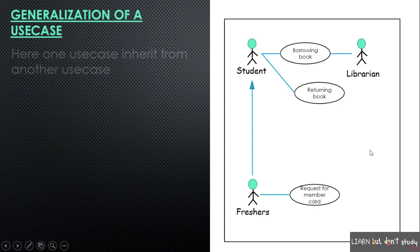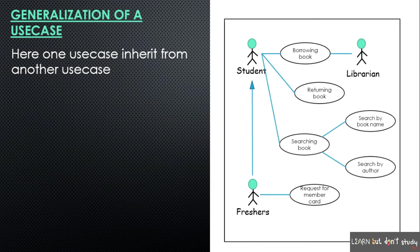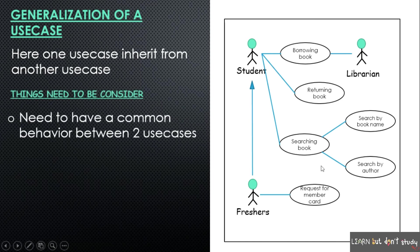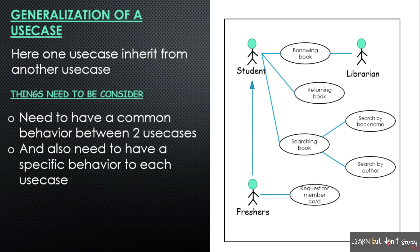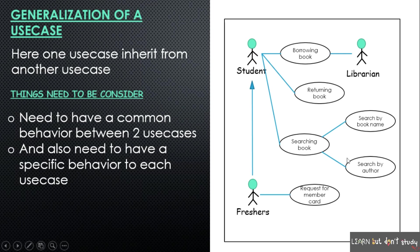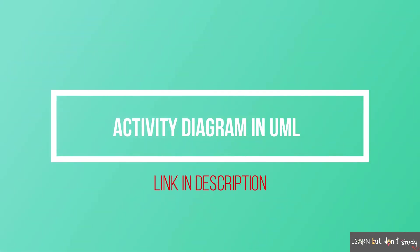Next is generalization of use case. One use case can inherit behavior from another use case. For example, searching book is the base use case, and search by book name and search by author are derived use cases that inherit the common search behavior. Each child use case also has specific behavior — for instance, search by author searches for books by a specific author, differentiating it from the general search.